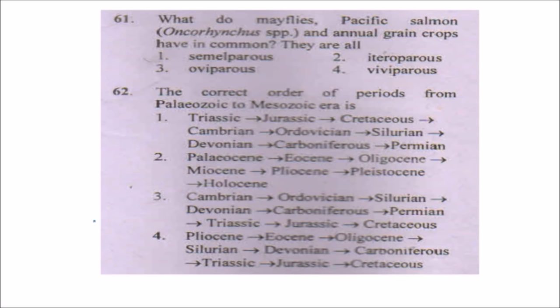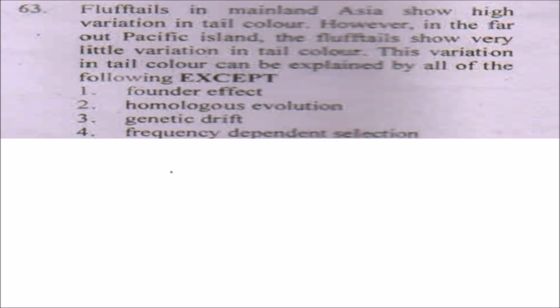The next question is: what do mayflies, Pacific salmon, and annual grain crops have in common? All are semelparous — meaning they have a single reproductive event during their whole life. The next question asks for the correct order of geological periods from the Paleozoic to Mesozoic era — the answer is option number three.